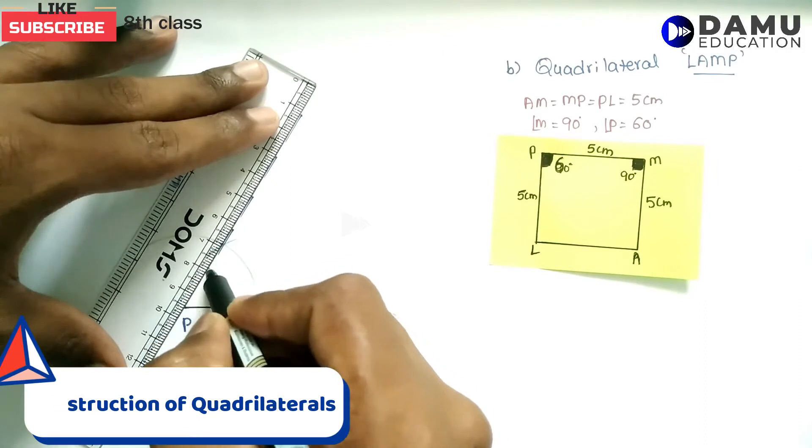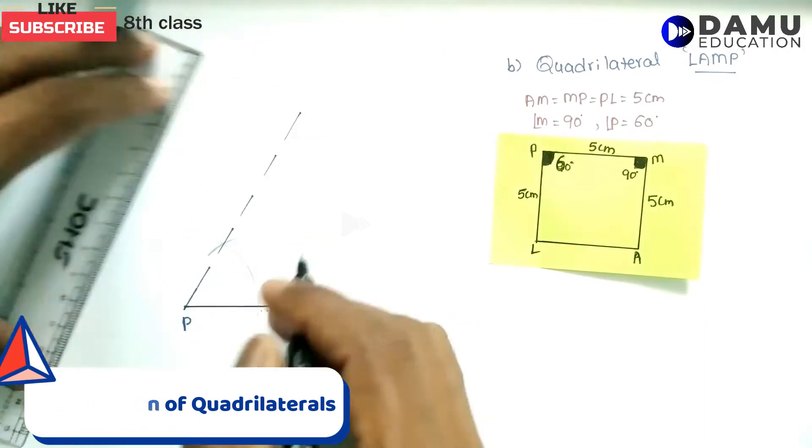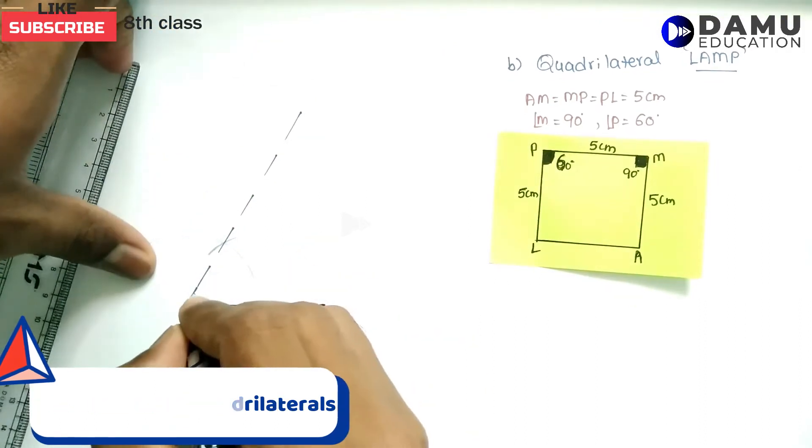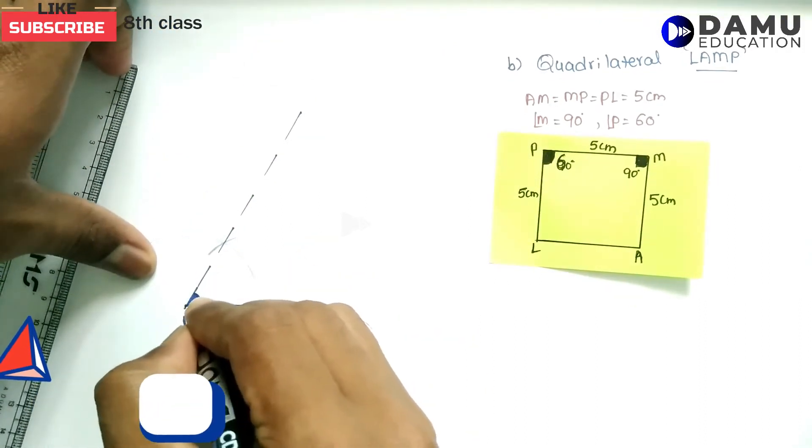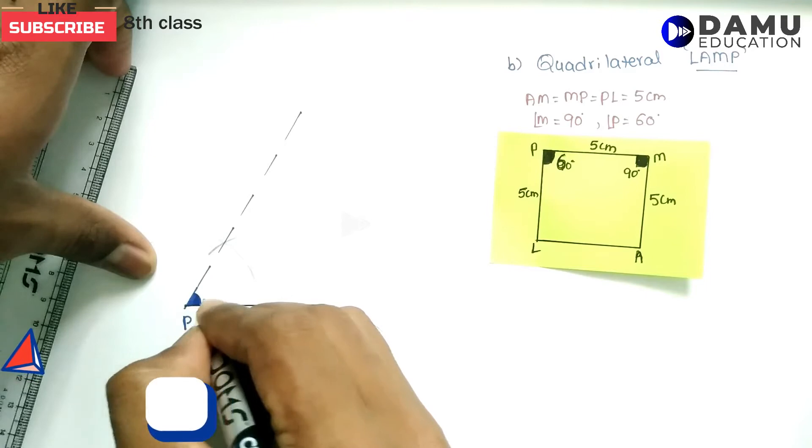Let us draw one ray along this direction. This angle here is 60 degrees.